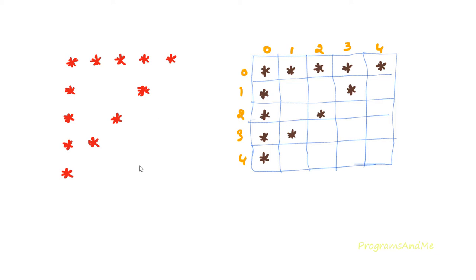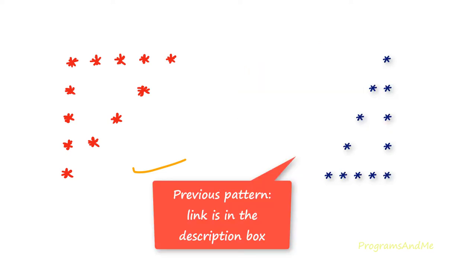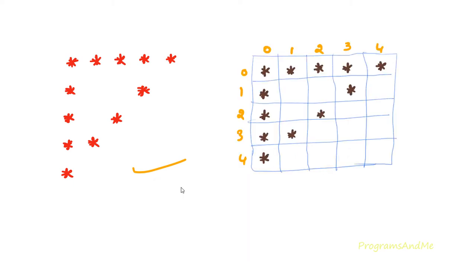We want to print stars in the hollow right triangle shape — that is this pattern. We already discussed a similar pattern in this video series and this program also works in the same way, but here we want to place stars and spaces in different positions. I am using the previous pattern program as the base to write this program.